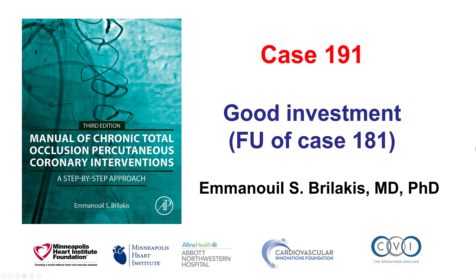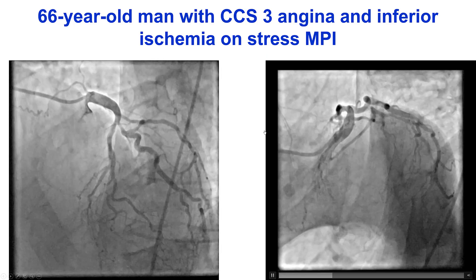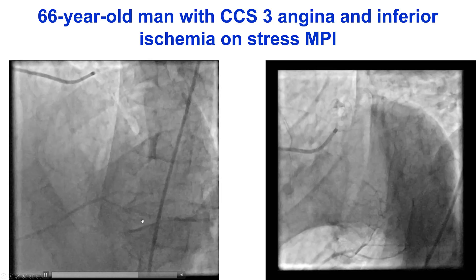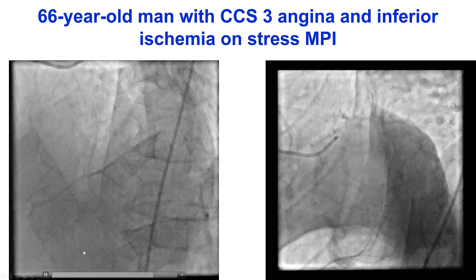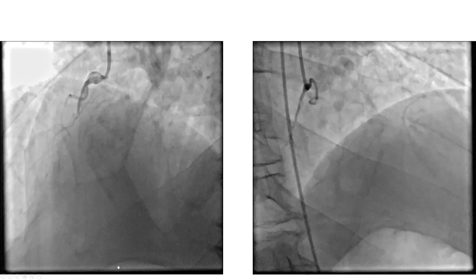This is Manos Brilakis, and this is case 191 for the Manual of CTO Interventions. This is a follow-up of case 181, which was an investment procedure. As a reminder for that case, the patient had disease in the LAD and had a CTO of the right coronary artery that was filling via collaterals from the left.